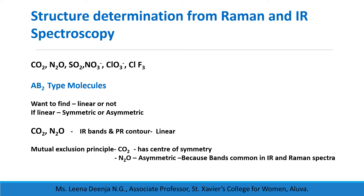Our next topic is structure determination from Raman and infrared spectroscopy. We take CO2, N2O, SO2, NO3-, ClO3-, and ClF3 as examples. First, we consider AB2 type molecules. For any molecule, we first want to find whether it is linear or not, and if linear, whether it is symmetric or asymmetric. Taking the Raman and infrared spectra of CO2 and N2O, we can see IR bands with P-R contour — if we get such bands, then that molecule is linear. So CO2 and N2O are linear molecules.